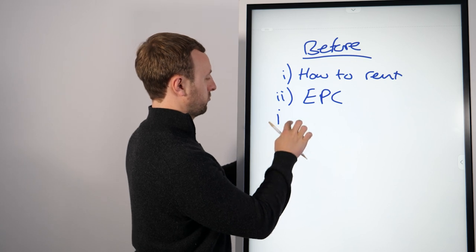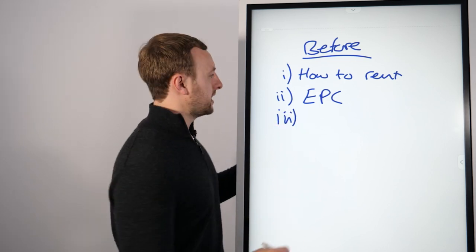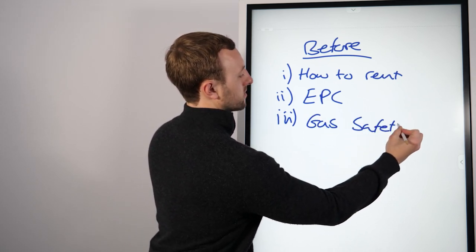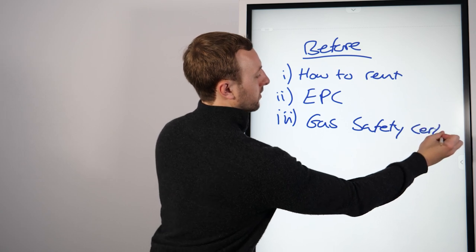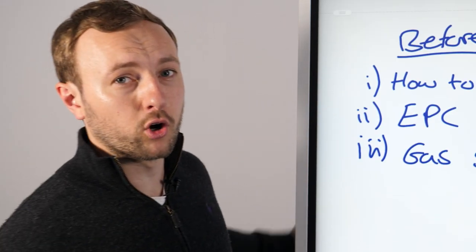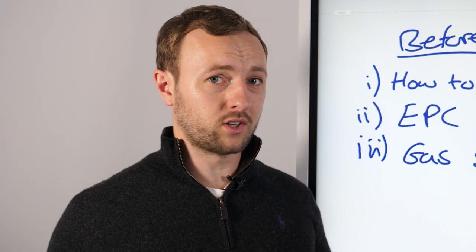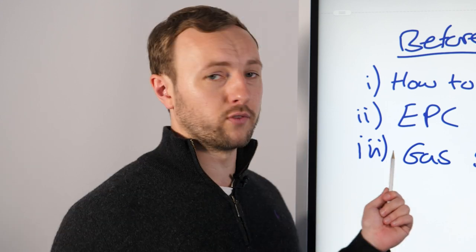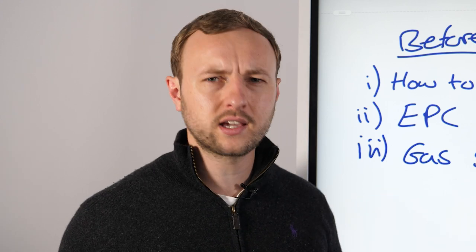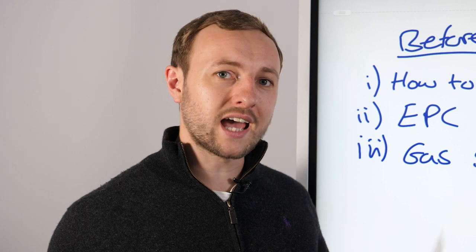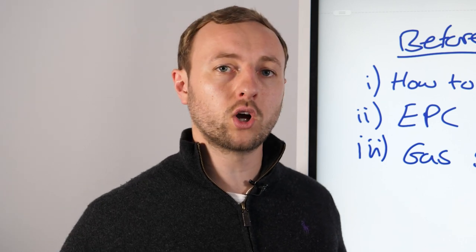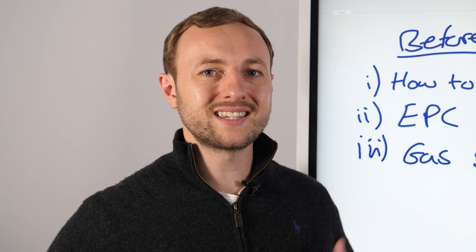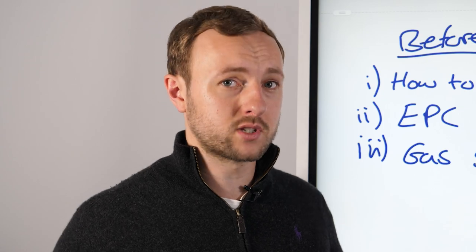The next thing is making sure you've given them the gas safety certificate. This is really important — a lot of landlords who haven't done this may find their property isn't up to standard. Make sure your gas safety certificate is in place and any works needed are completed on the central heating system to make sure it's safe and economical for your tenant to use.